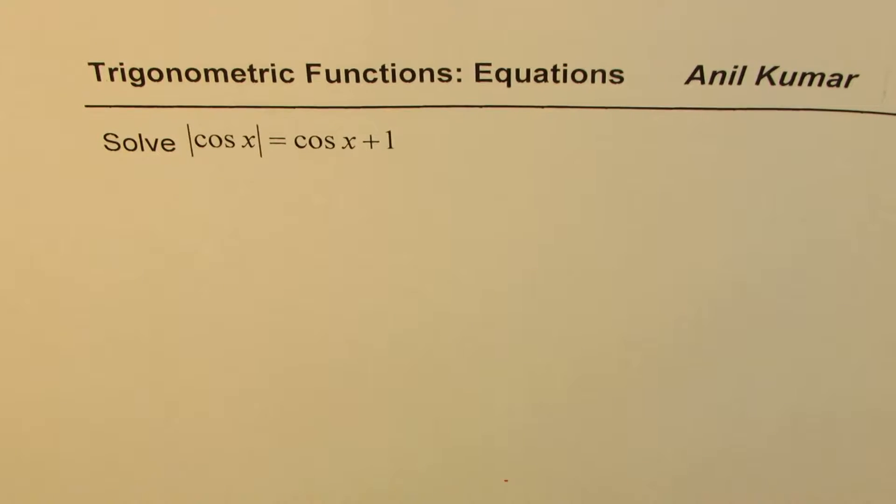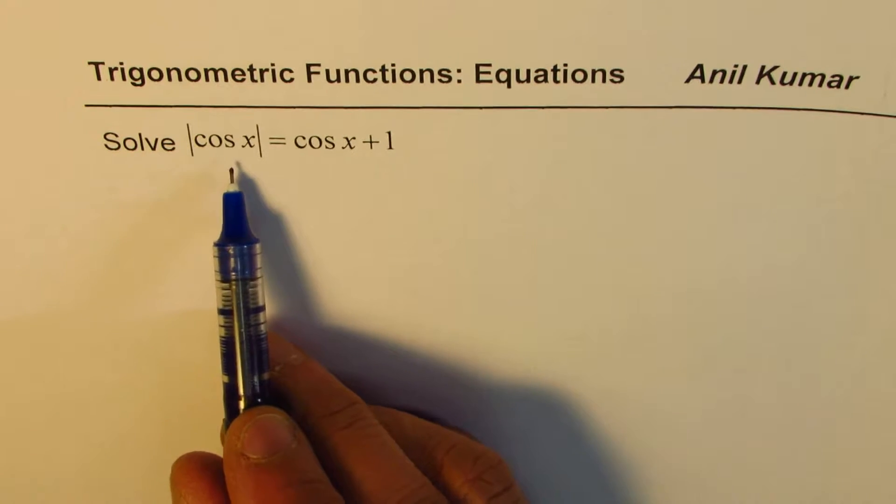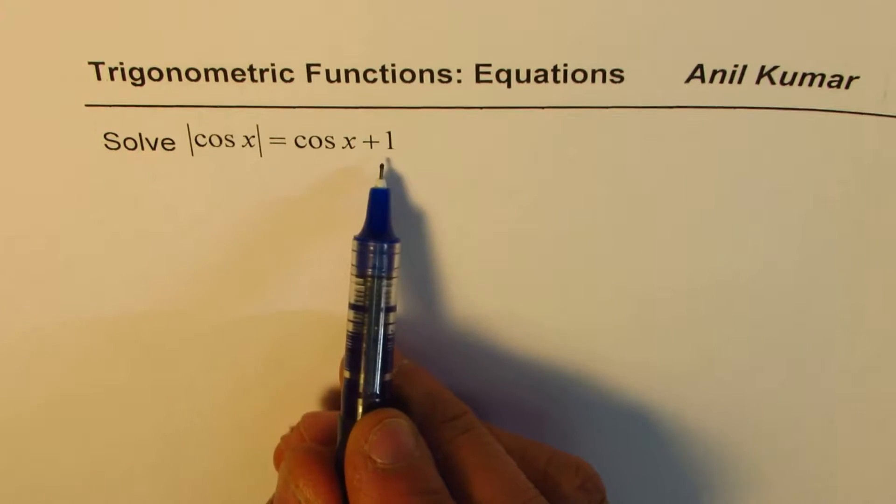I am Anil Kumar, sharing with you a test question on trigonometric functions combined with absolute functions. You need to solve this equation, which is absolute value of cos x equals cos x plus 1.